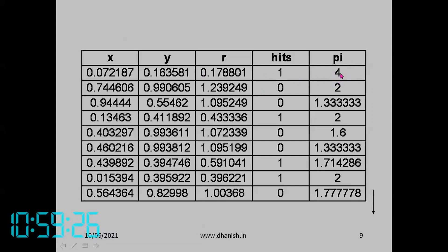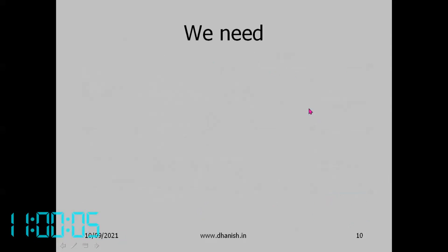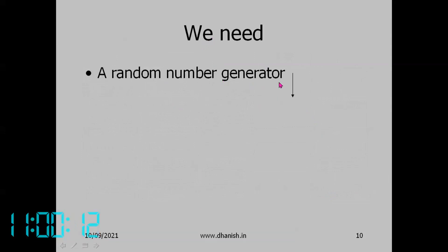In the second throw, random numbers were generated for x and y. If r equals 1.239, that is greater than 1 so it is not a hit. Now with one hit and one failure, pi/4 equals 1/2, so pi equals 2. You repeat this for a large number of times to determine pi. You need a random number generator as the key tool for such analysis.